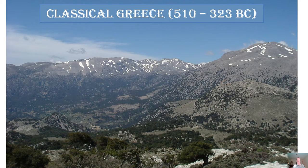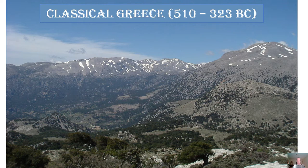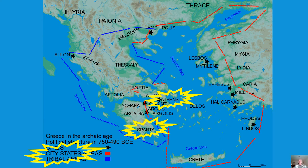Starting with classical Greece — to understand Greece, you need to understand the geography. Greece is very mountainous. Mountains isolate and separate people, especially in 510 BC. There were no airplanes to fly over mountains or tunnels through them. So having mountains in an area isolates the people who live there. As a result, Greece never became one large empire. Rather, they had a lot of city-states, and the two main city-states you should know about are Athens and Sparta.